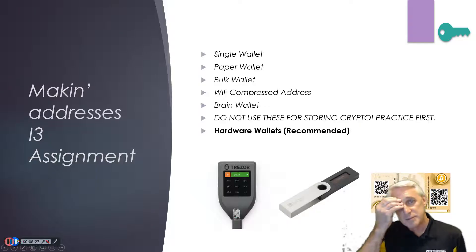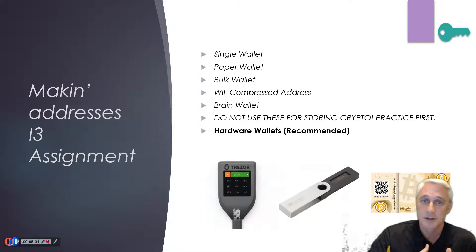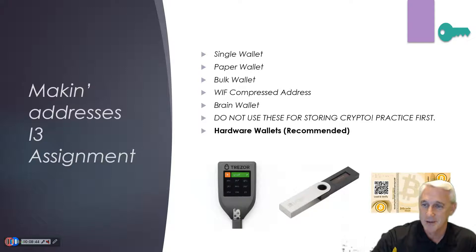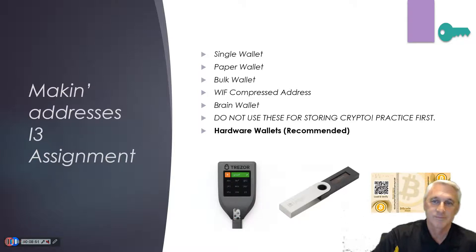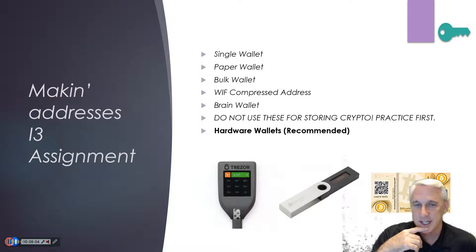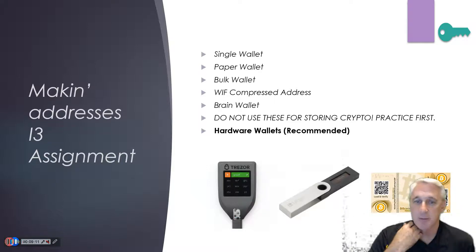Speaking of wallets, you can have a single wallet — the paper wallet I just showed — or a bulk wallet with multiple wallets. You'll play with the WIF compressed address on that website, and there's also a brain wallet, which I wouldn't recommend unless you have a photographic memory since it expects you to memorize something. Remember, the stuff you're generating here is not for actual transactions — this is just so you understand the relationship between those two keys.